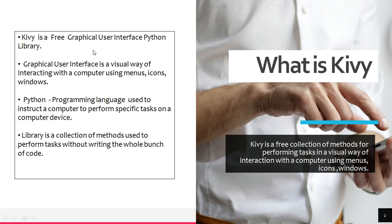Kivy is a free graphical user interface Python library where all the stuff with regard to windows, icons and menus is available. You just need to use this library to create your application. It makes sure that all the stuff is there without complexity, saves a lot of time, and the application will run on different platforms like Android, iOS, and Windows.